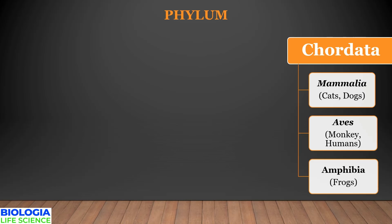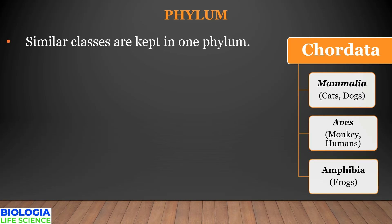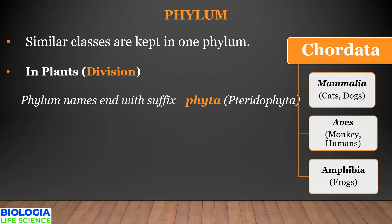Moving toward the highest category, we come to phylum. Phylum includes many classes with common characters. In animals, classes like Pisces, Amphibia, Reptilia, Aves, and Mammalia are placed in phylum Chordata due to shared features such as the presence of a notochord at some life stage, a dorsal nerve cord, and gill slits. In plants, this category is named division and generally ends with the suffix -phyta, for example Bryophyta and Pteridophyta.